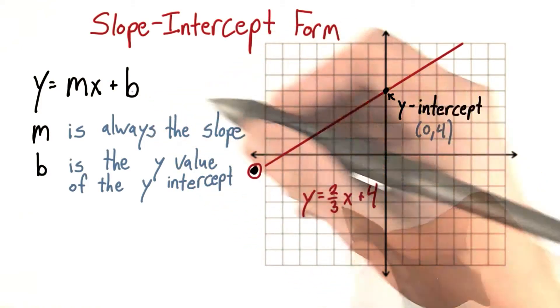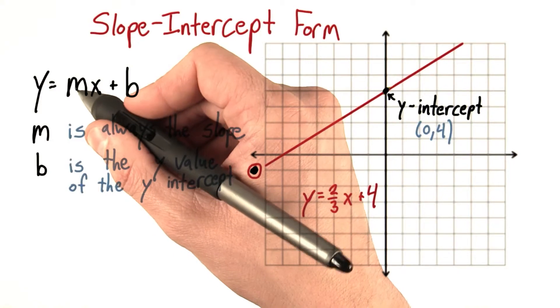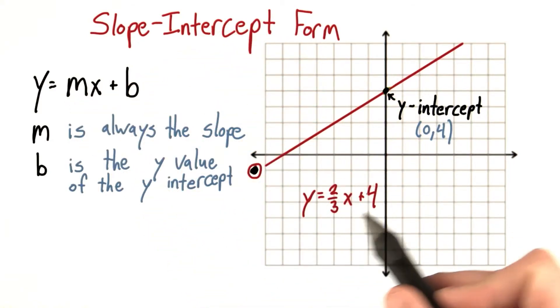4 has taken the place of b, 2 thirds has taken the place of m, and that makes sense. This is the slope, 2 thirds, and that's the y-value of the y-intercept, 4.